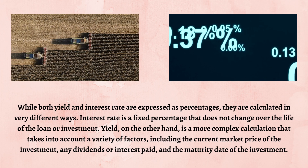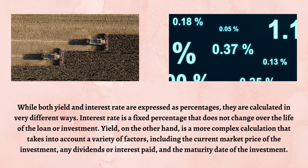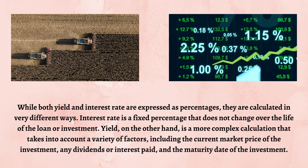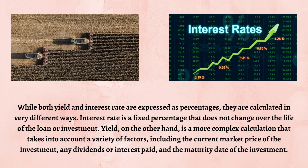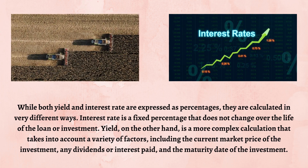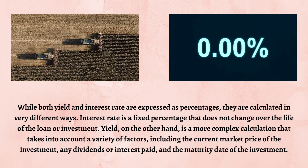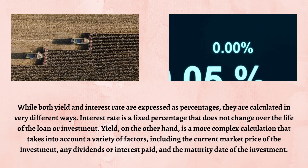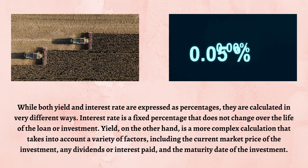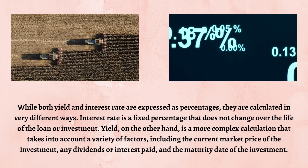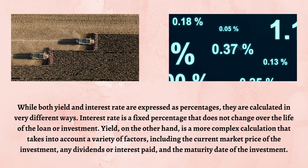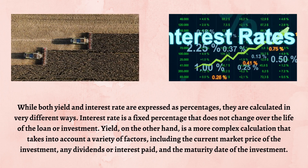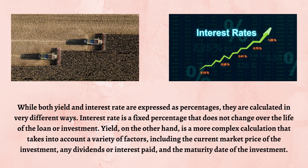While both yield and interest rate are expressed as percentages, they are calculated in very different ways. Interest rate is a fixed percentage that does not change over the life of the loan or investment. Yield, on the other hand, is a more complex calculation that takes into account a variety of factors, including the current market price of the investment, any dividends or interest paid, and the maturity date of the investment.